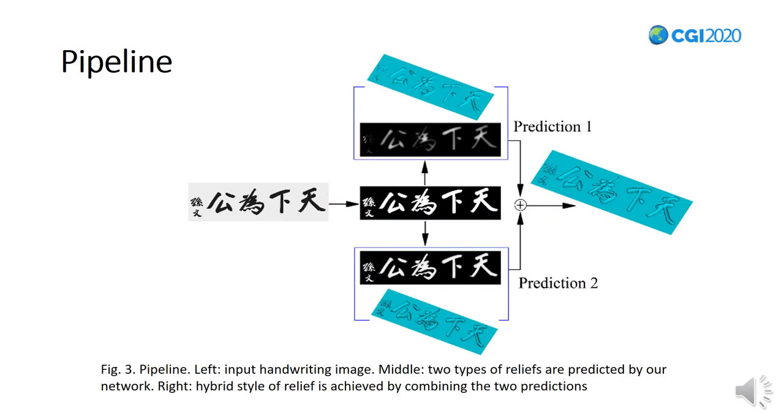Given a handwriting image with RGB channels as input, we first convert it into a single-channel bitmap with white fonts and a black background. Then we design a neural network to predict two types of height views from the same bitmap. Finally, we combine the height views together and output it in mesh format.